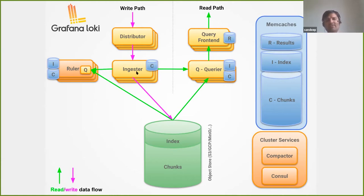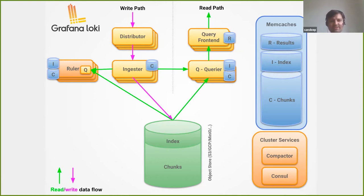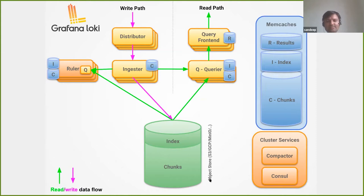After getting logs to the ingestor, they store the logs in memory for a configured duration — typically one hour. After that, it flushes the logs into chunks and adds the index entry in the index store. Long-term storage is divided into chunk store and index store. We support object stores like S3, GCP, MinIO, and Azure, and different index stores like Bigtable, Cassandra, DynamoDB, and BoldDB for running locally.